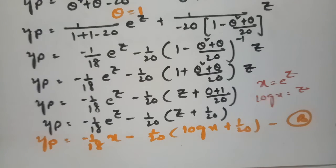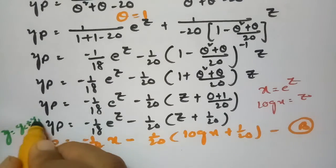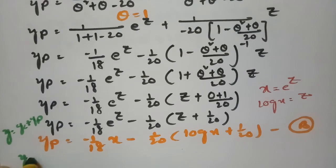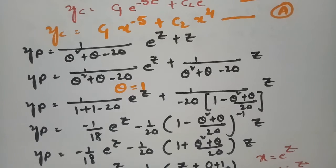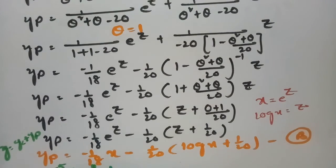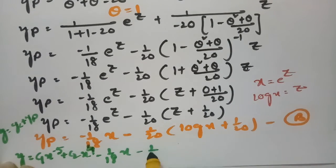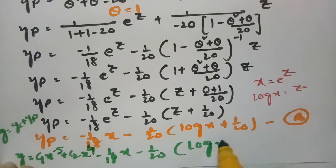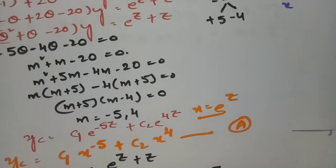The general solution is y = yc + yp: y = c1·x^(−5) + c2·x^4 − x/18 − (1/20)·log x + 1/20.